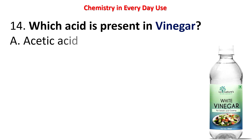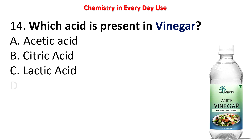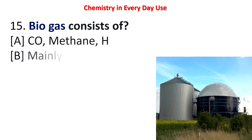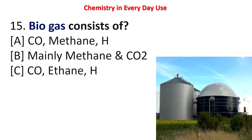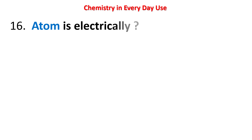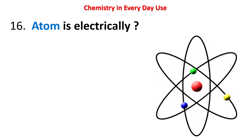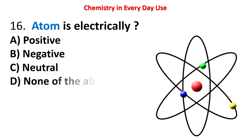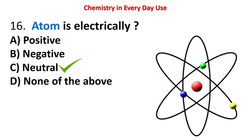Next question: which acid is present in vinegar? Options: acetic acid, citric acid, lactic acid, tartaric acid. The answer is acetic acid. Next question: biogas consists mainly of — CO, methane, H; mainly methane and CO2; CO and ethane; or methane only? The answer is mainly methane and CO2. Next question: an atom is electrically — positive, negative, neutral, or none of these? An atom is electrically neutral.